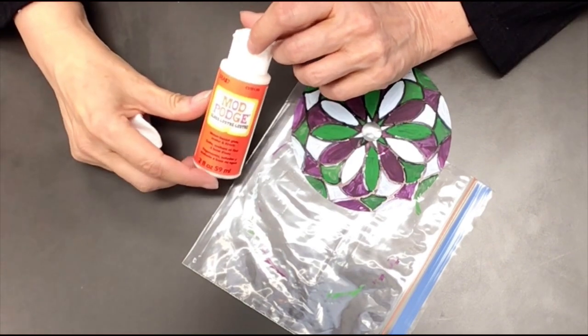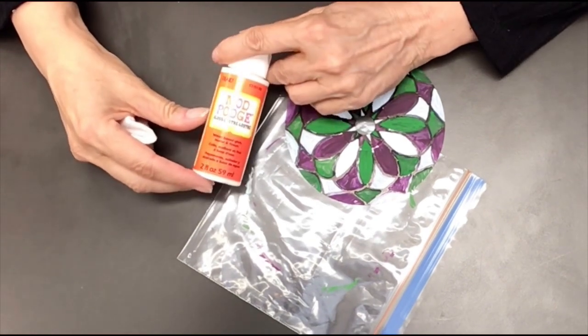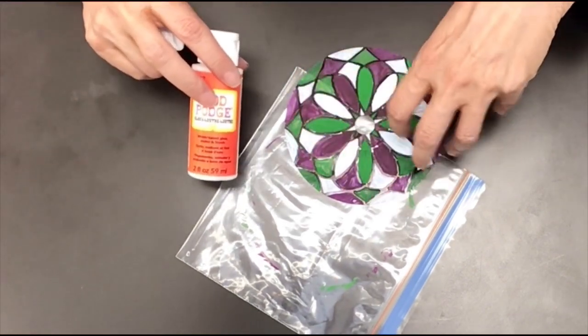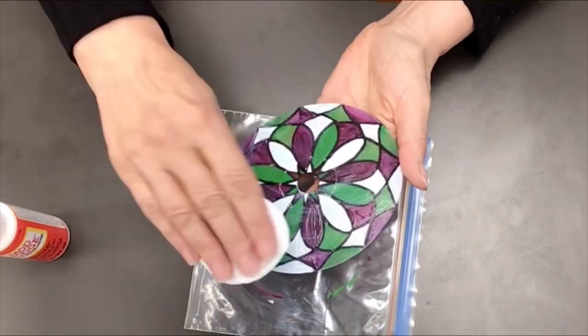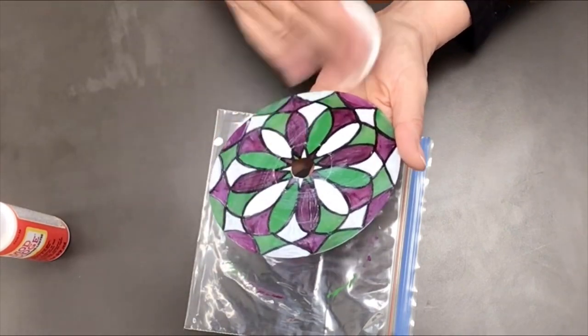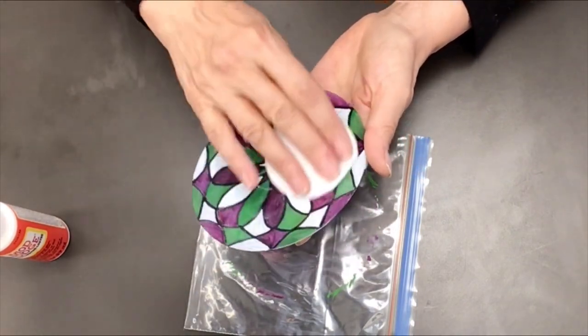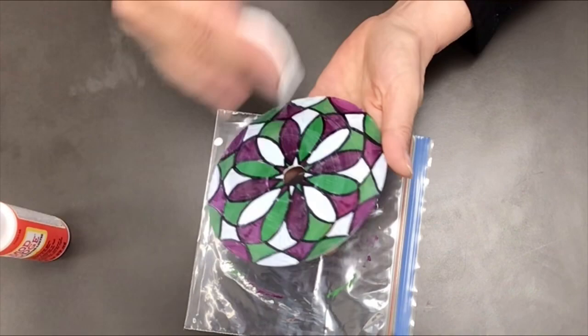Finally it's time to pull out your Mod Podge or clear nail polish and you're going to seal the painted surface. Not only does the seal provide a nice gloss finish it also protects the paint so that it doesn't peel off especially if you're going to be hanging this outdoors.